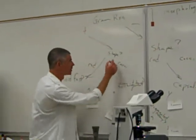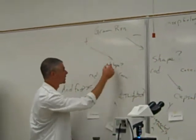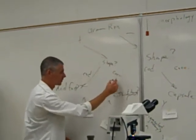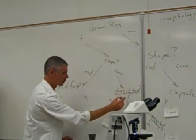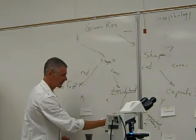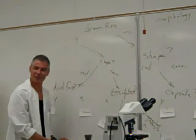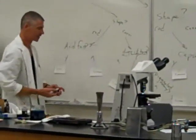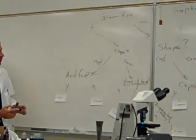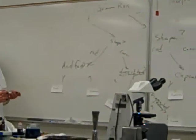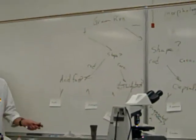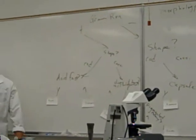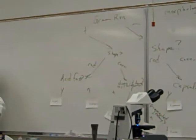We have gone from general to more and more specific, even to the point of looking at its molecules as to what it has. So if you have a test tube with an unknown organism in it, you do a gram stain.